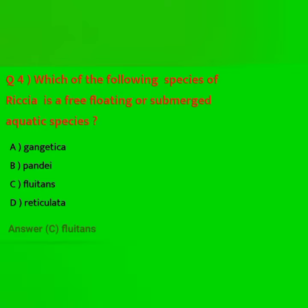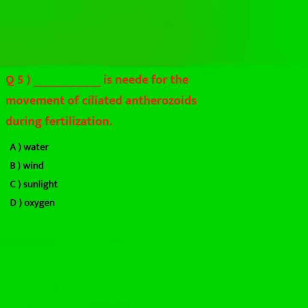Question: Which of the following species of Riccia is a free-floating or submerged aquatic species? Options: gangetica, pandae, fluitans, reticulata. Answer: Riccia fluitans.